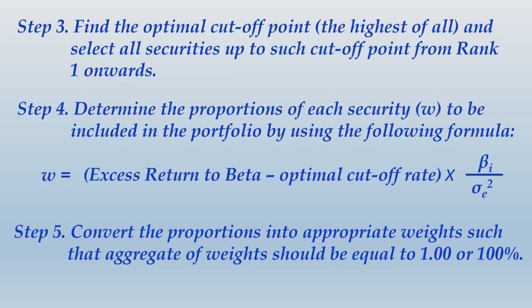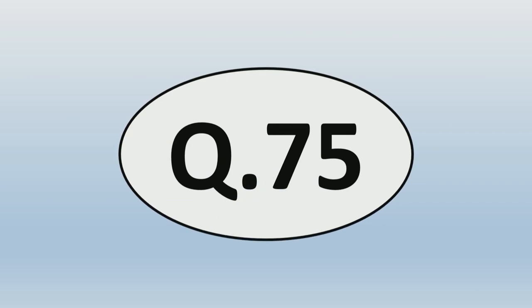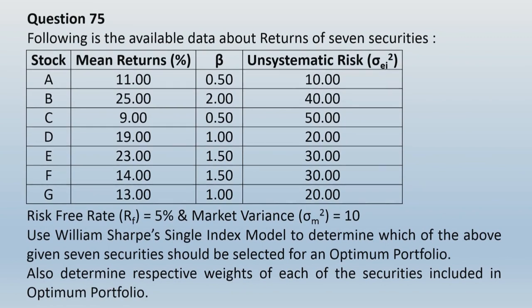Friends, these steps are given in your textbook so you don't need to write them. Now let's see their application through questions. Coming up next is Question Number 75. The question provides data about returns of seven securities - stocks A, B, C, D, E, F, G - with their mean returns (average returns), unsystematic risk in variance form, risk-free rate RF given as 5%, and market variance given as 10. Using William Sharpe's single index model, determine which securities should be selected in an optimal portfolio and determine respective weights of each security included.